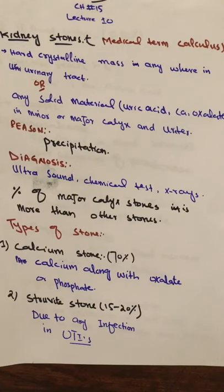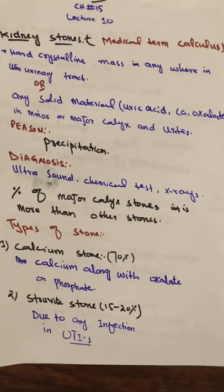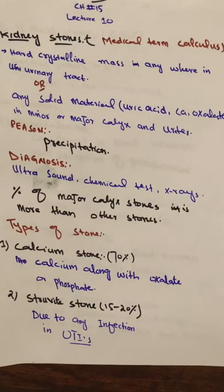Now we talk about the types of stone. The first type is calcium stone. Calcium stone is about 70% of all kidney stones — the majority. Calcium along with oxalate or phosphate forms these stones. Calcium oxalate or calcium phosphate is the major type of kidney stone, comprising about 70%.